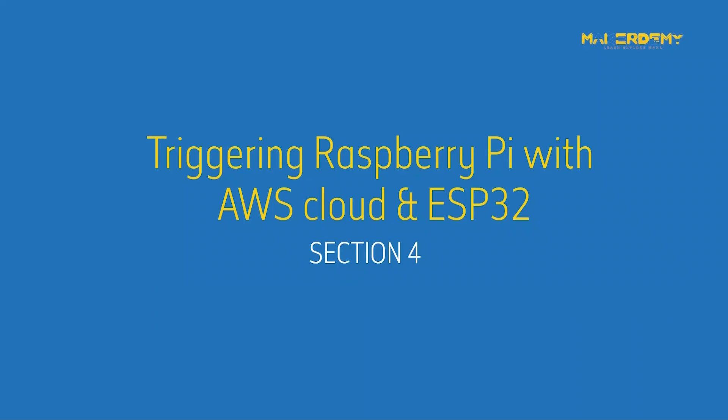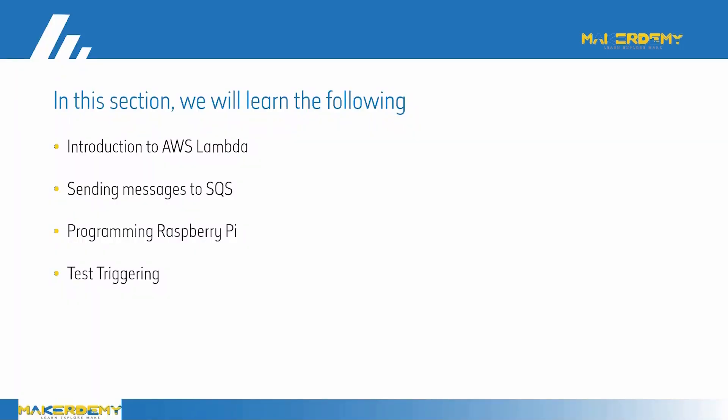Section 4: Triggering Raspberry Pi with AWS Cloud and ESP32. In this section, we will learn the following: Introduction to AWS Lambda, Sending Messages to SQS, Programming Raspberry Pi, and Test Triggering.